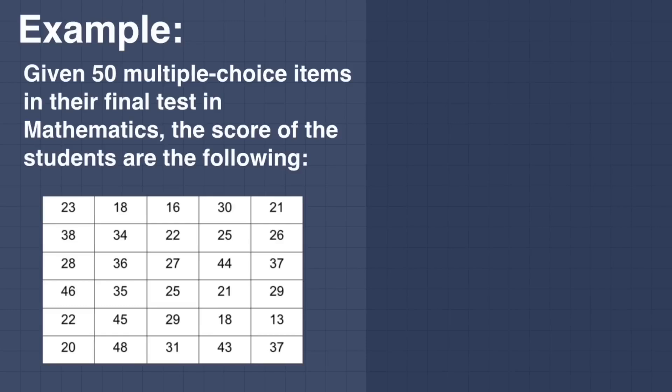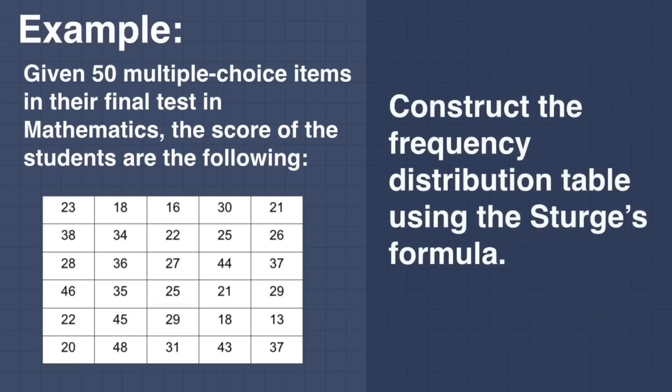We have 30 scores consisting of 6 rows and 5 columns. Now, construct the Frequency Distribution Table using the Sturge formula.